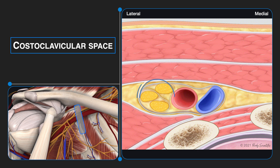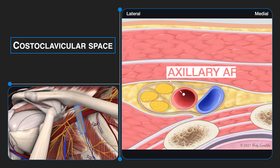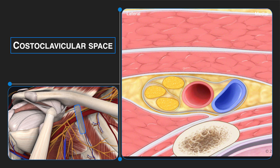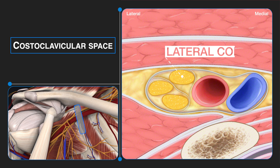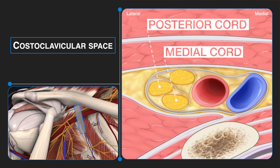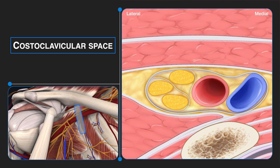Here, the medial, lateral, and posterior cords are located posterior to the first part of the axillary artery. This is the target for a costoclavicular brachial plexus block. As demonstrated in the image, the lateral cord may be in a distinct fascial compartment that is separate from the medial and posterior cords in their own fascial compartment.